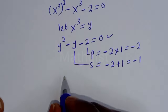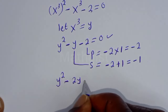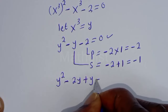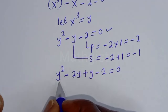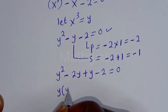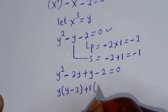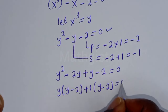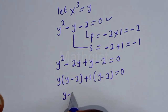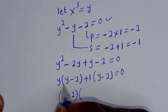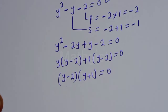Substituting, we get y^2 minus 2y plus y minus 2 equals 0. y is common: y(y minus 2) plus 1(y minus 2) equals 0. Then (y minus 2) is common, giving (y minus 2)(y plus 1) equals 0.